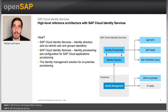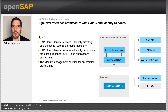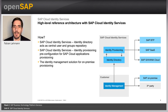Based on the open architecture we are using here — the SCIM API — you can also access some Cloud Identity Services from externally. You can find the API definitions on the API Business Hub for more details.